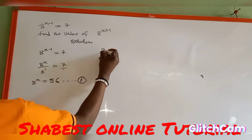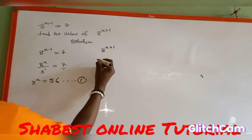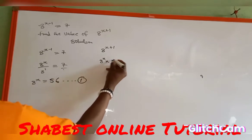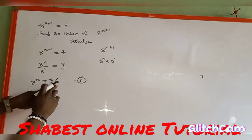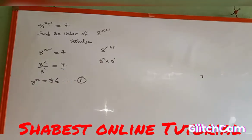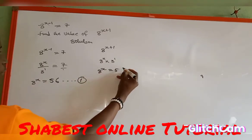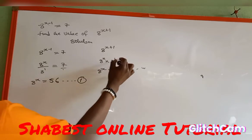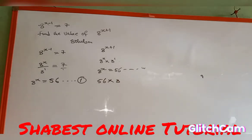I am asked to find the value of 8 to the power of s plus 1. This 8 to the power of s plus 1 can be written as 8 to the power of s multiplied by 8 to the power of 1. And remember, from equation 1, 8 to the power of s is equal to 56. So I can substitute this 56 into the value of 8 to the power of s. So I will have here 56 multiplied by 8 to the power of 1, which is also 8.